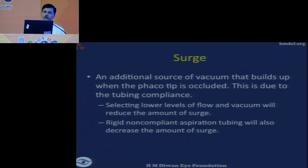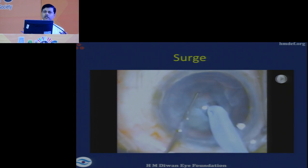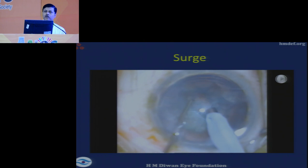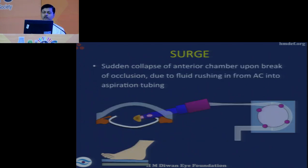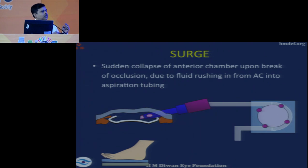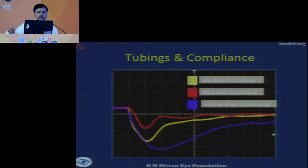Surge is an additional source of vacuum that builds up other than the pump, because the tip is occluded and the pump is working. For example, when I have impaled the nucleus and start chopping, there can be little movement and the anterior chamber comes down as soon as occlusion is released. Surge is more likely during chopping because you use higher parameters there. The tube collapses during occlusion and as it relaxes when occlusion is lost, an additional vacuum builds up that draws from the anterior chamber, causing it to collapse. Silicone tubing causes maximum negative pressure surge; the best option is rigid low-compliant tubing, known by the name Intrepid.